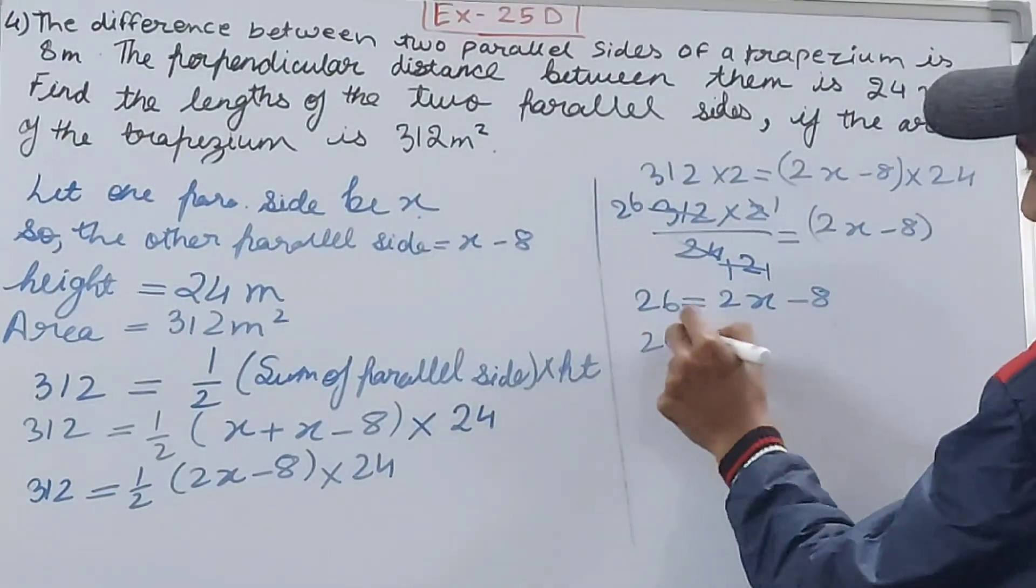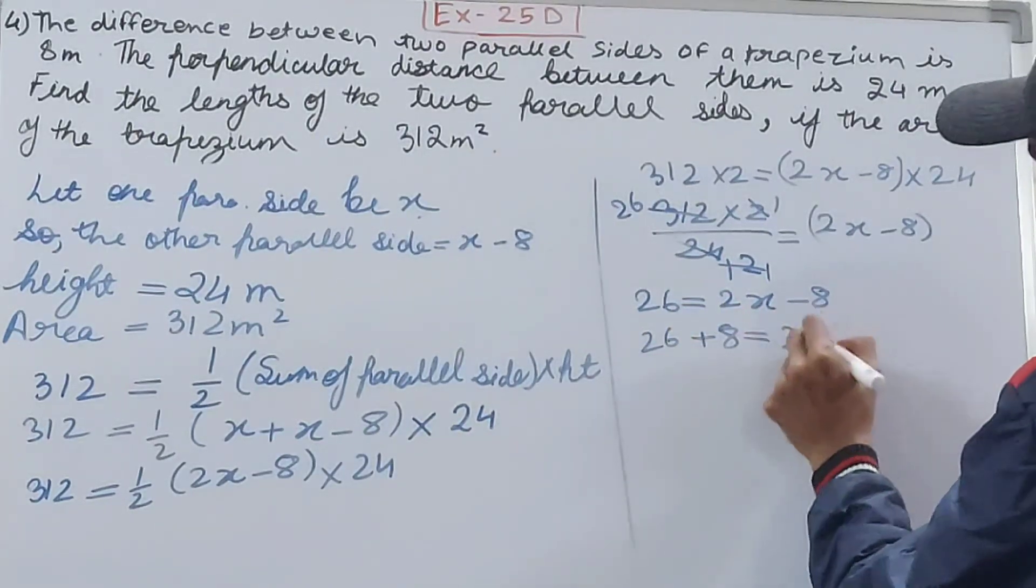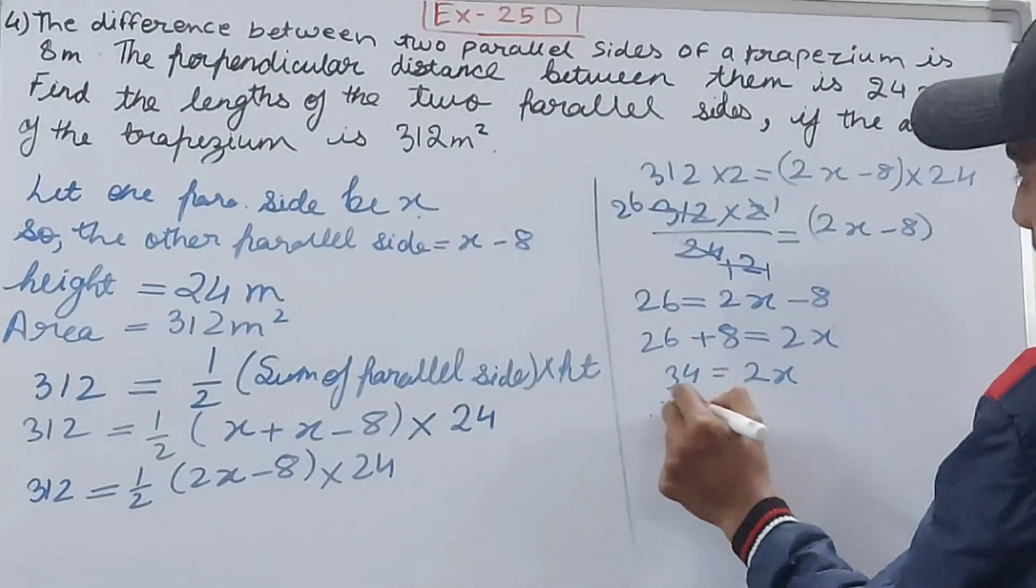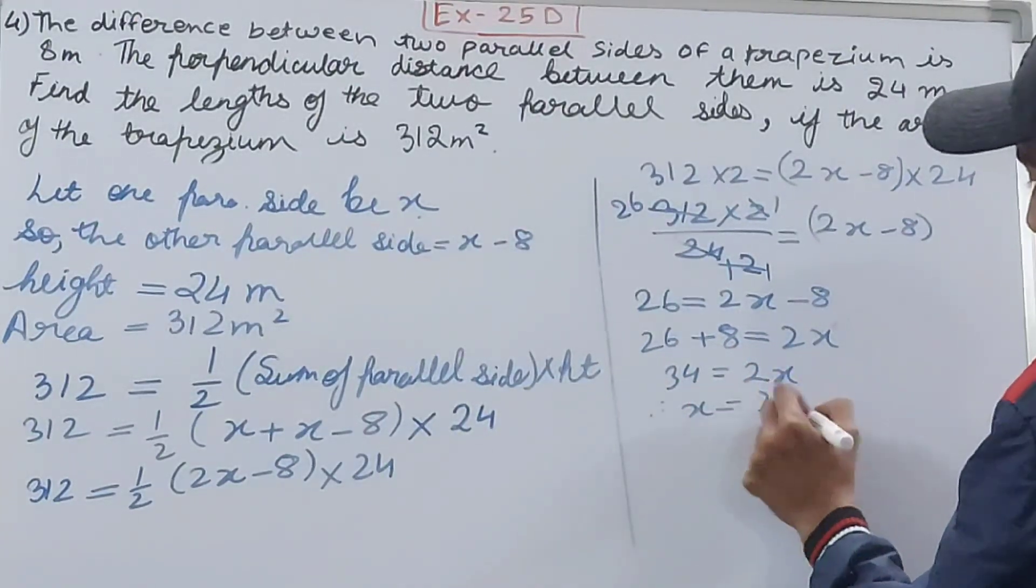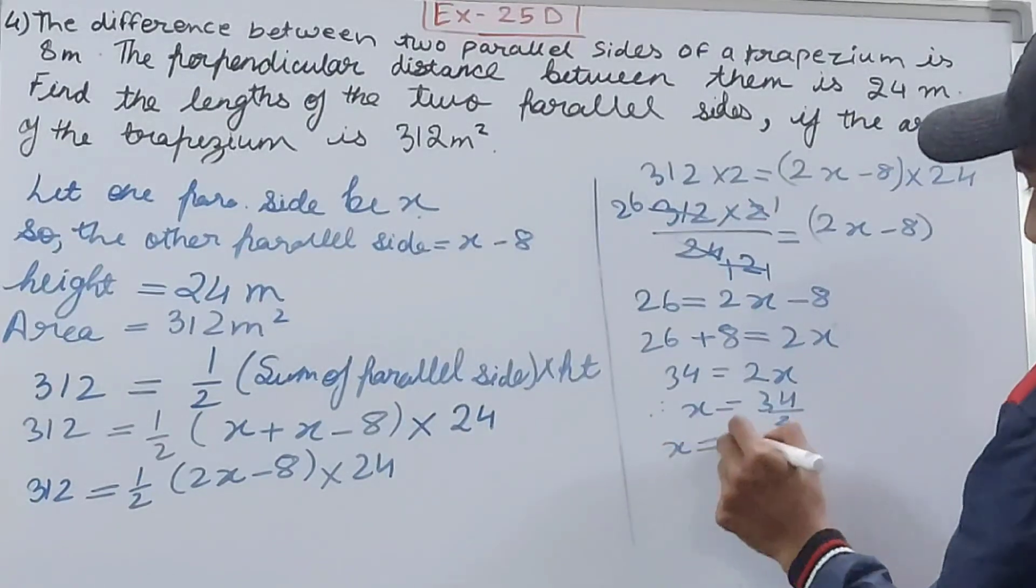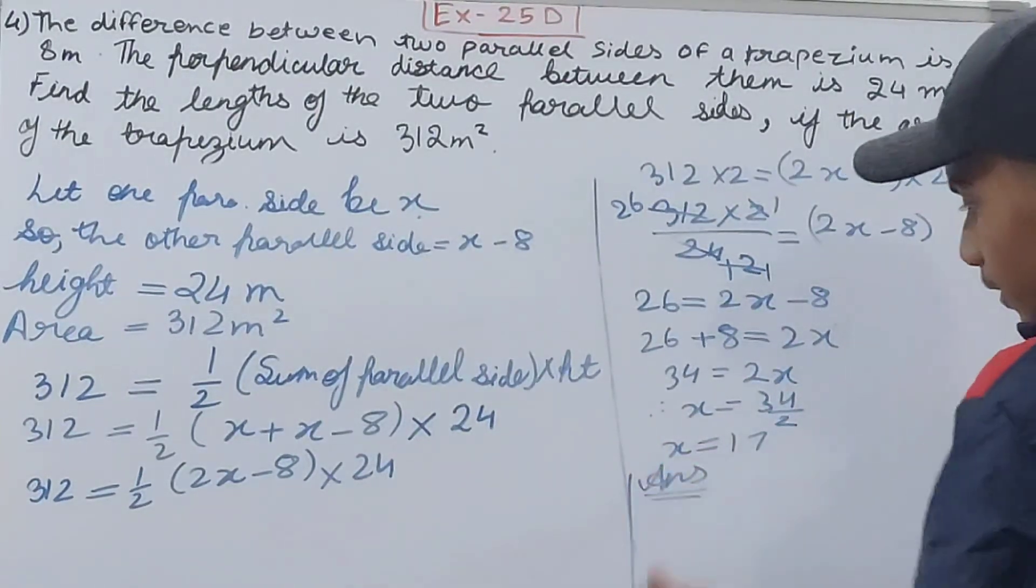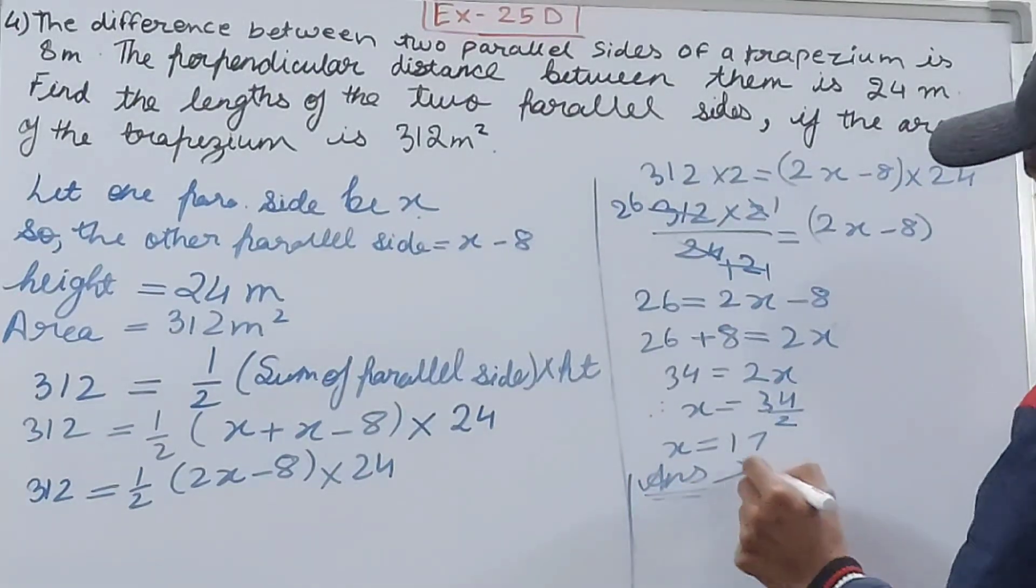26 equals 2X minus 8. 26 plus 8 equals 2X. Just a very simple equation - solve this. Therefore X equals 34 by 2, X is 17.